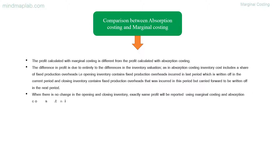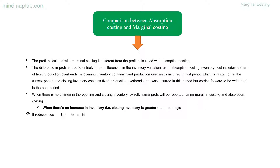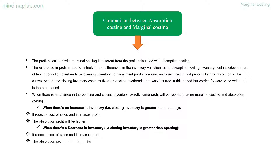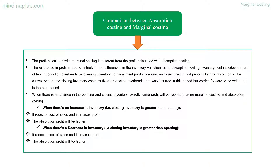When there is an increase in inventory — that is, closing inventory is greater than opening inventory — it reduces cost of sales and increases profit, so the absorption profit will be higher. When there is a decrease in inventory — that is, closing inventory is less than opening inventory — it increases cost of sales and reduces profit, so the marginal costing profit will be higher.